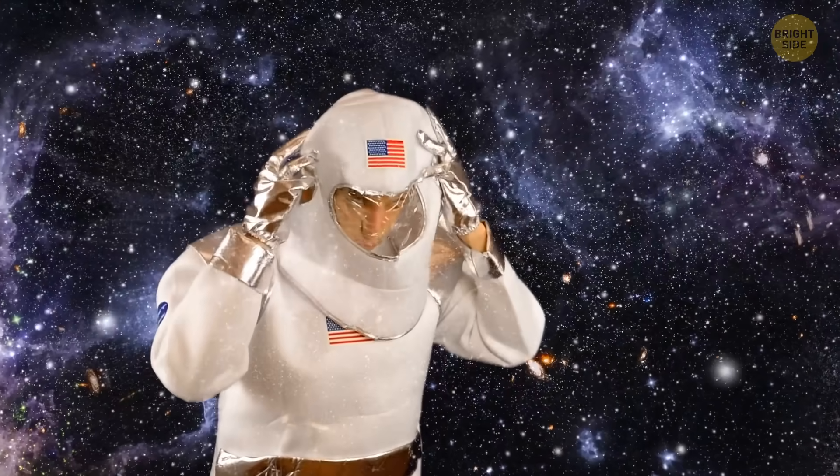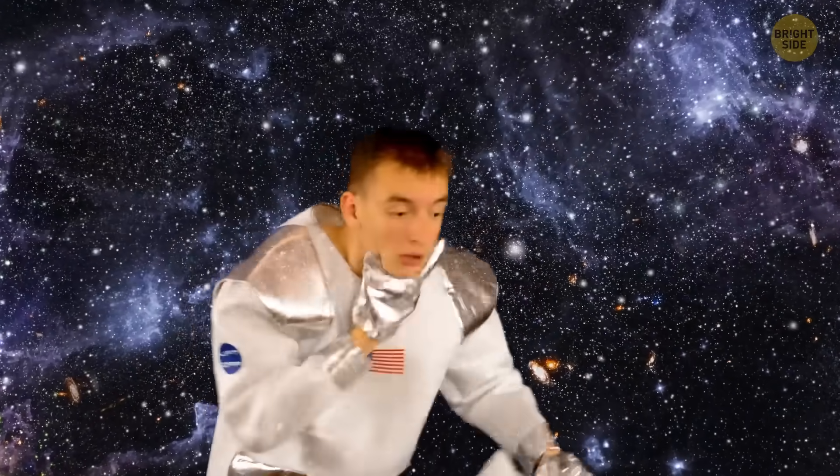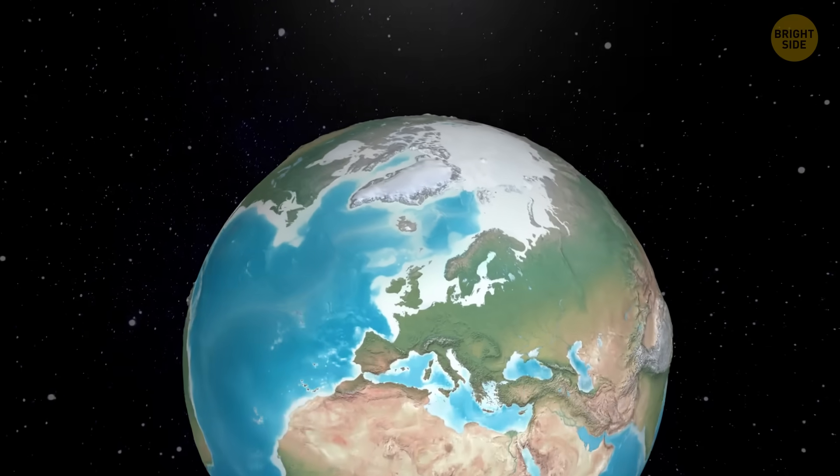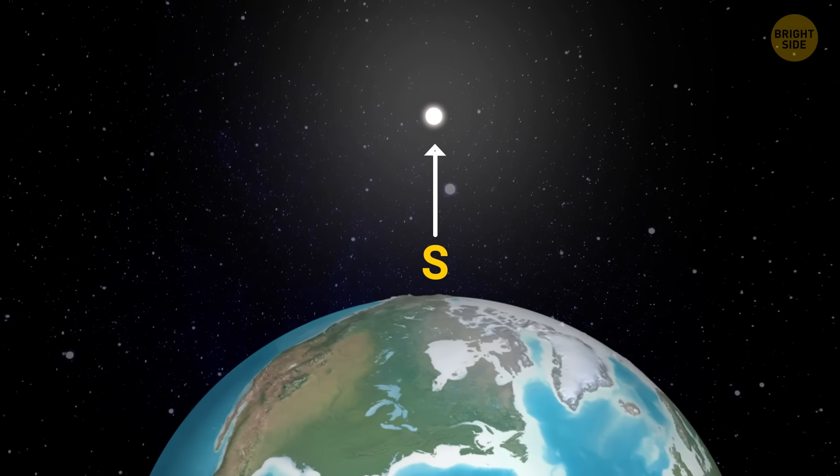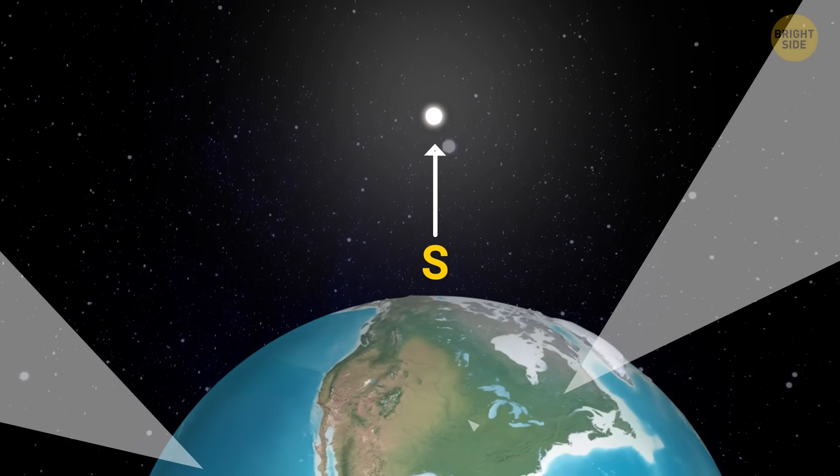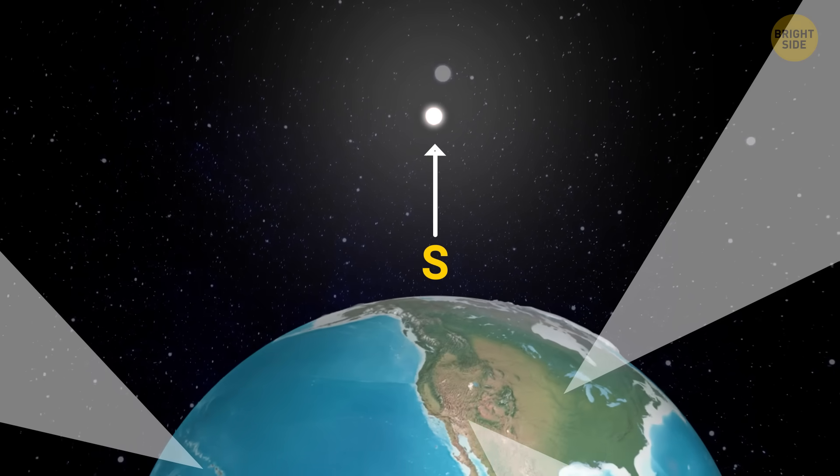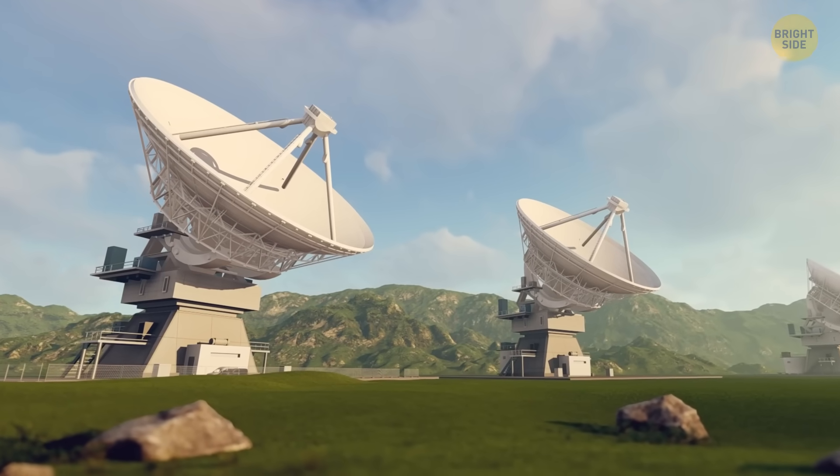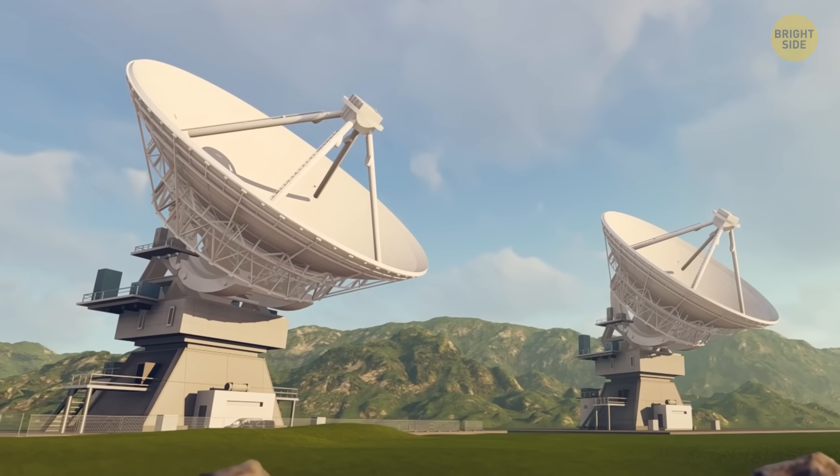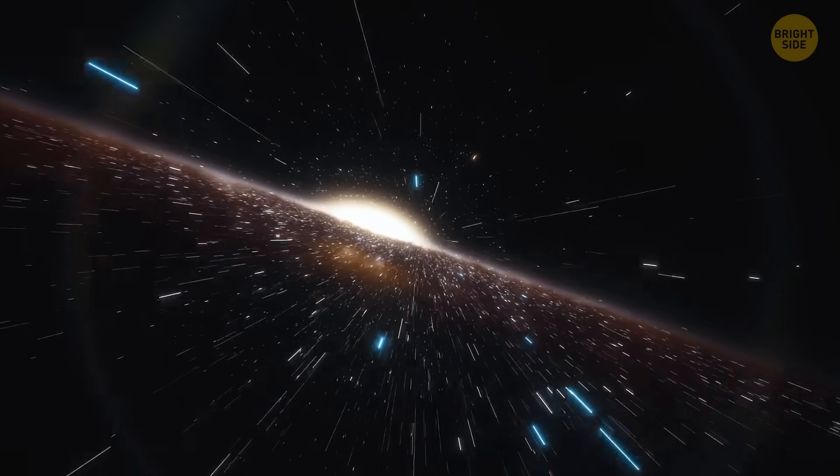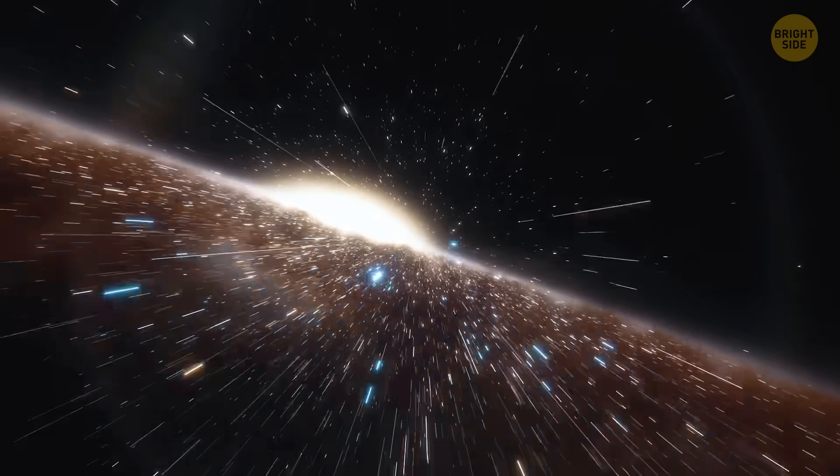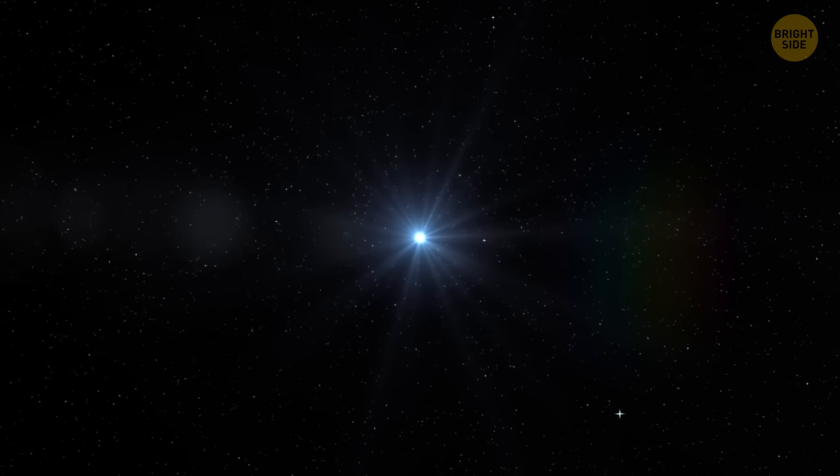One explanation might be that at least one of the measurements is simply wrong. After all, Polaris is a difficult star to study. Since it's positioned above our planet's north pole, it's outside the field of view of most telescopes. As for those telescopes that do have the needed equipment for measuring the star's properties precisely, they're typically used for studying much more distant and fainter stars. Polaris is simply too bright for such instruments. It blinds them.